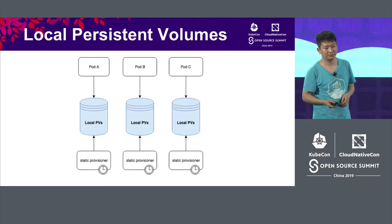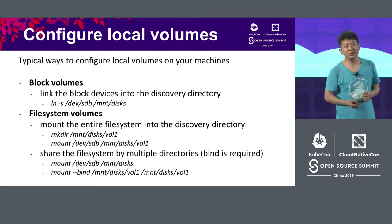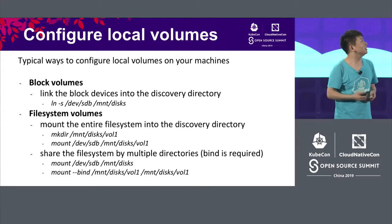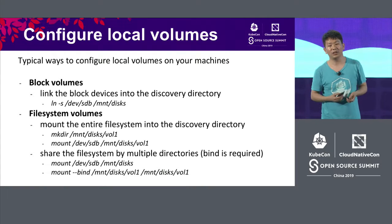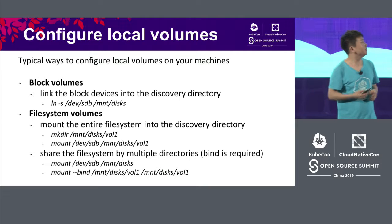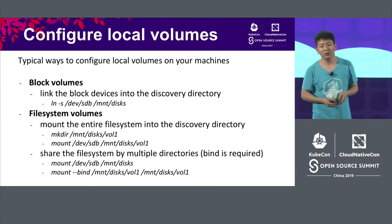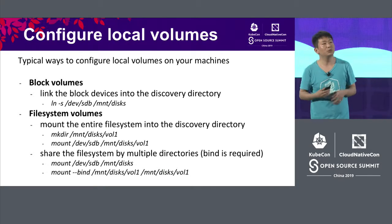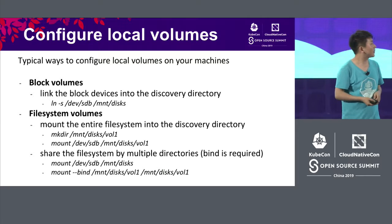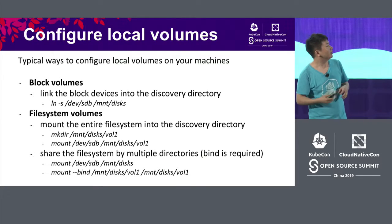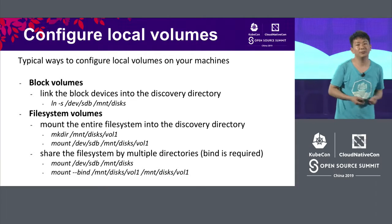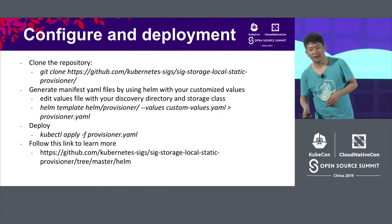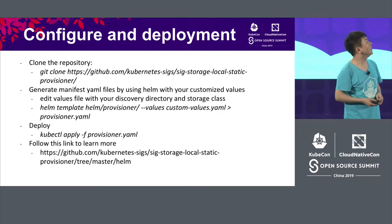Here is a simple flow chart. The configuration of local PVs has several typical steps. For the first step, you can link the device to the target directory — the discovery directory that the provisioner monitors on local machines. You can also share local PVs with multiple directories. Then you can link block devices into the discovery directory, or mount an entire file system into the discovery directory for filesystem volumes.